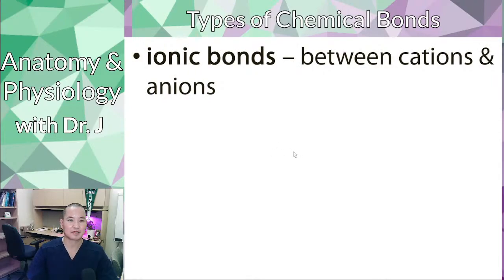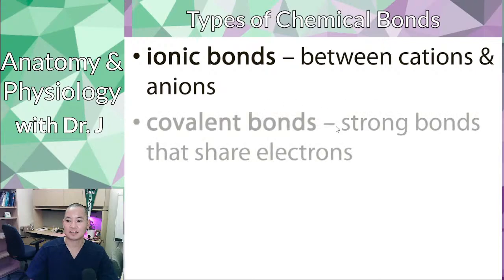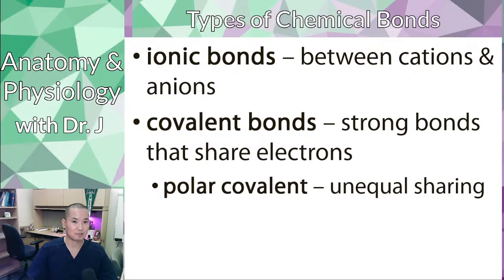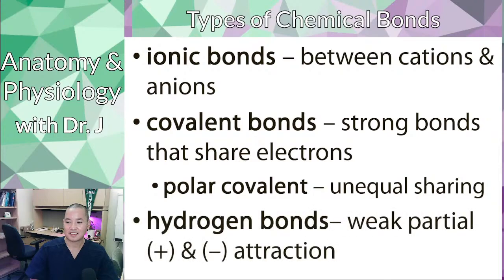There are several different types of chemical bonds, but the ones you definitely should know for this class are ionic bonds, covalent bonds, and polar covalent bonds — which are a subtype of covalent bonds. Polar covalent bonds are still covalent bonds, but they're a little special. And then hydrogen bonds, which are not the same as polar covalent bonds; they're related, but not the same.